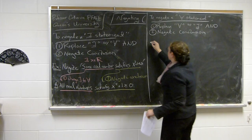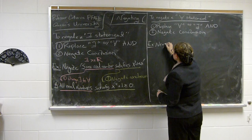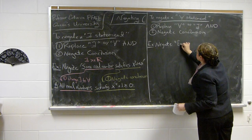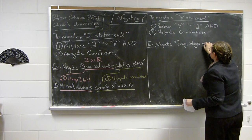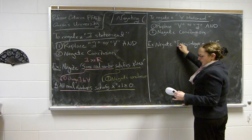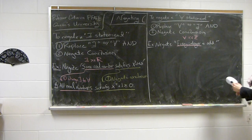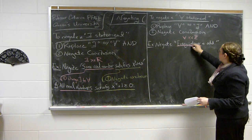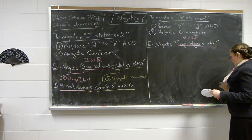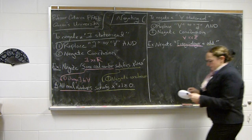Let's go ahead and do an example. The tricky part here is we want to keep the universe of discourse the same — that's the only new part. So we want to negate the statement that every integer is odd. It helps to look at this symbolically. This is the same as: for all x in the integers, x is odd. The universe of discourse is the integers, and our conclusion is 'x is odd.'